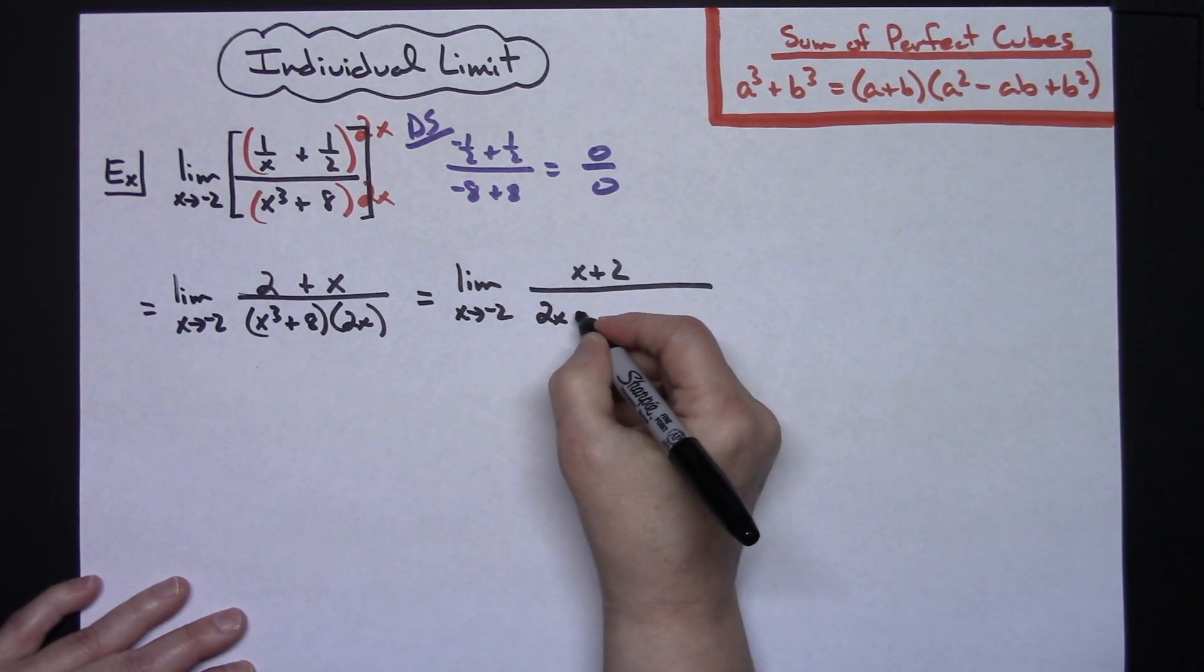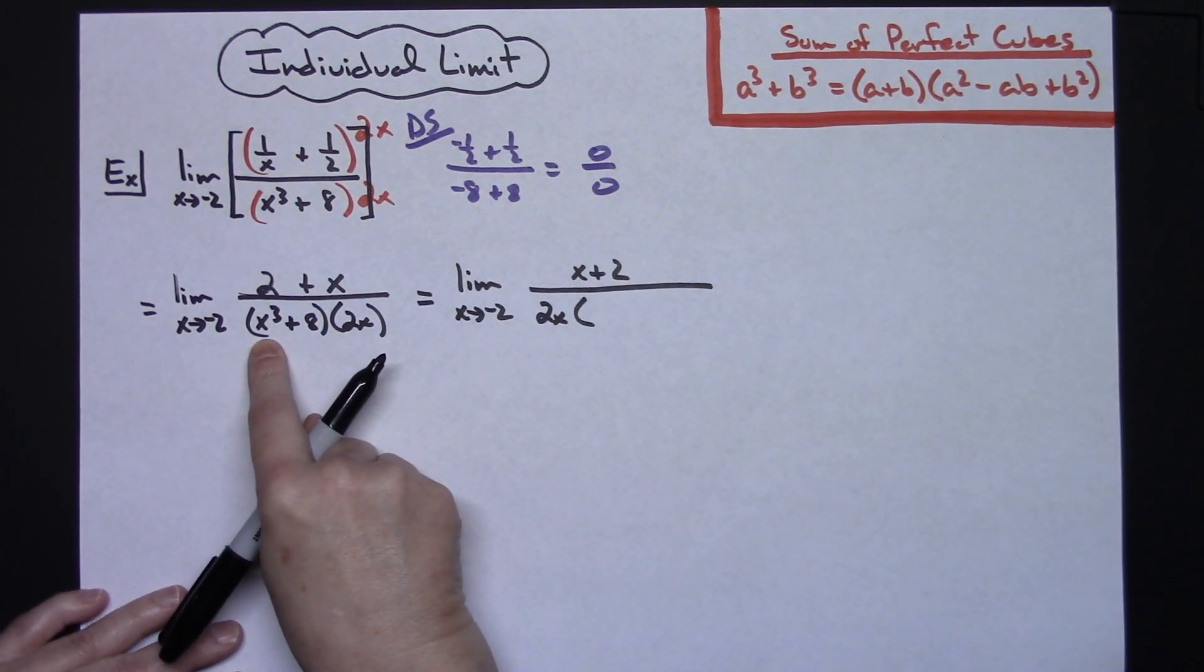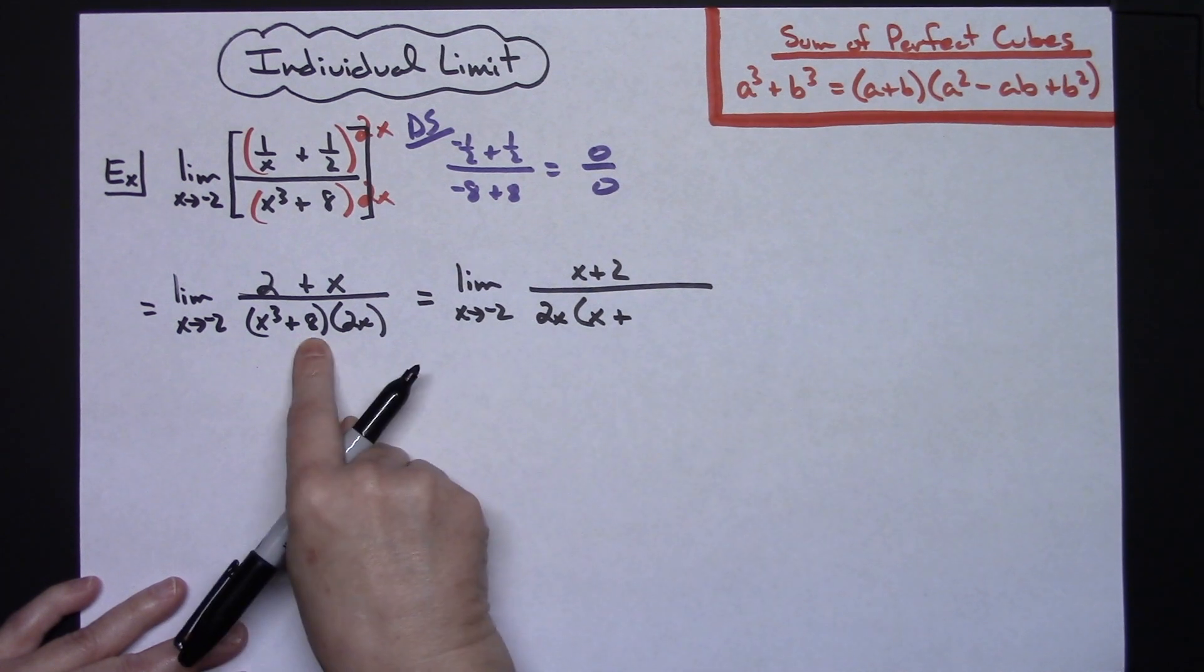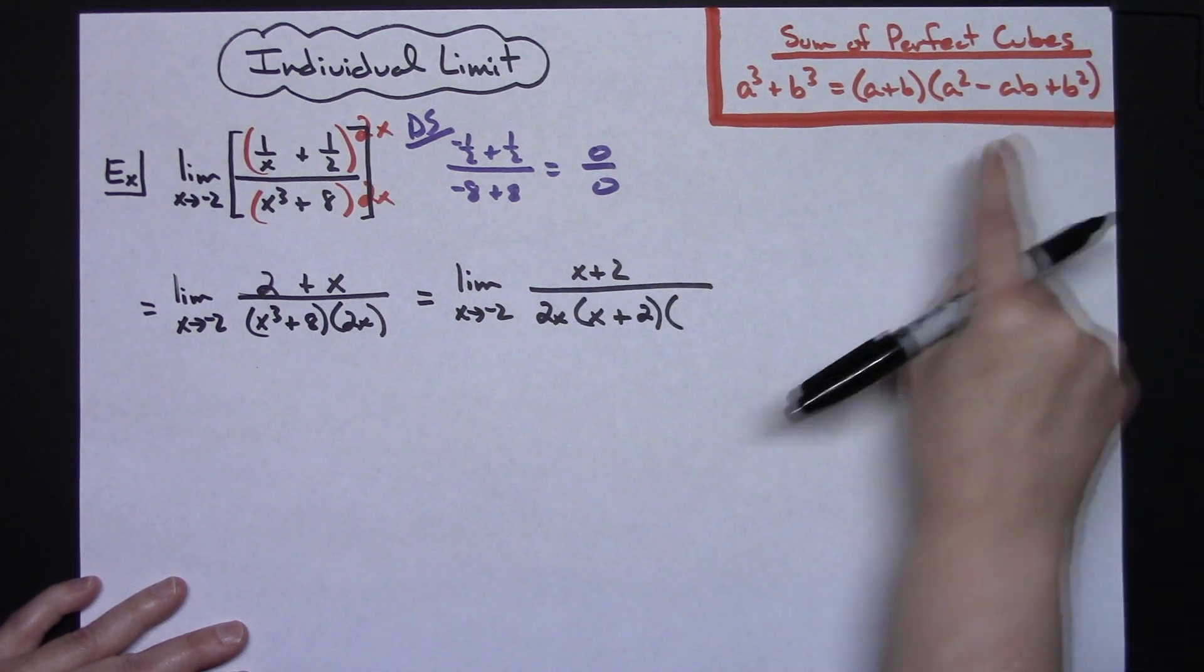Now let's go through and factor this. I think I'm going to take that 2x and put it in front just to get it out of the way. Following this formula, cube root of x to the third is going to be an x. I'm going to keep the same sign; cube root of 8 is going to give me a 2.